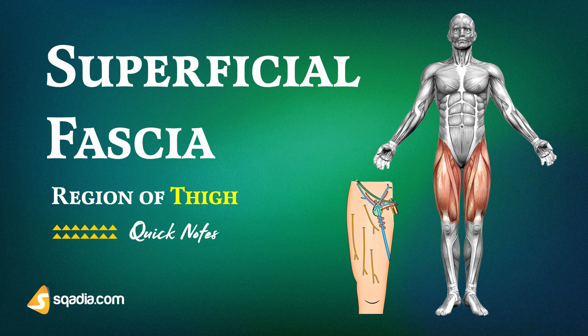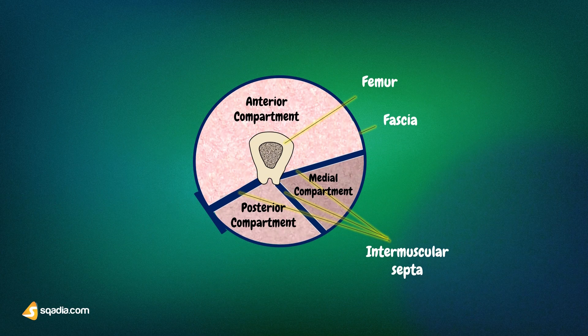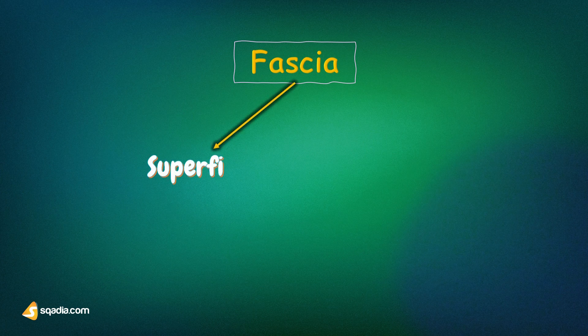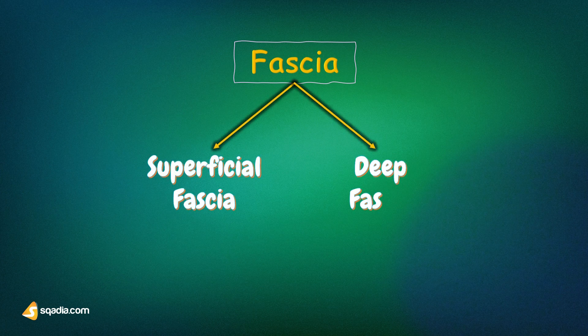In the previous section, I mentioned that the region of the thigh is divided into compartments. This division comes to be due to the presence of fascia. The fascia of the thigh is seen as the superficial fascia and deep fascia, also called fascia lata.